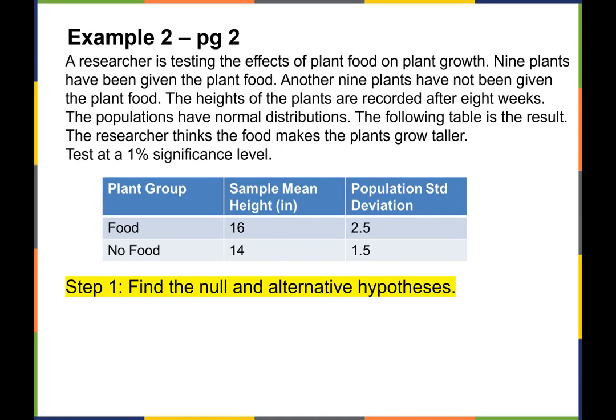The null and alternative hypotheses: the researcher thinks the food makes the plant grow taller, meaning the height for the food group is bigger than for the no-food group. So the alternative hypothesis is Mu 1 > Mu 2, and the null hypothesis is that the food does not make a difference — Mu 1 ≤ Mu 2.